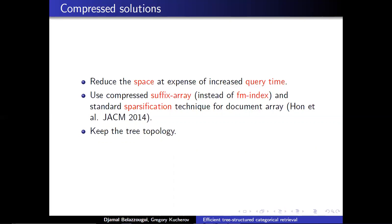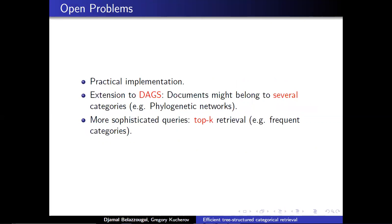Finally, as an open problem, it would be interesting to extend this problem to directed acyclic graphs, for example phylogenetic networks, and to support more sophisticated queries, for example top-k retrieval. We would return the categories in decreasing order of frequency. I think I am done.